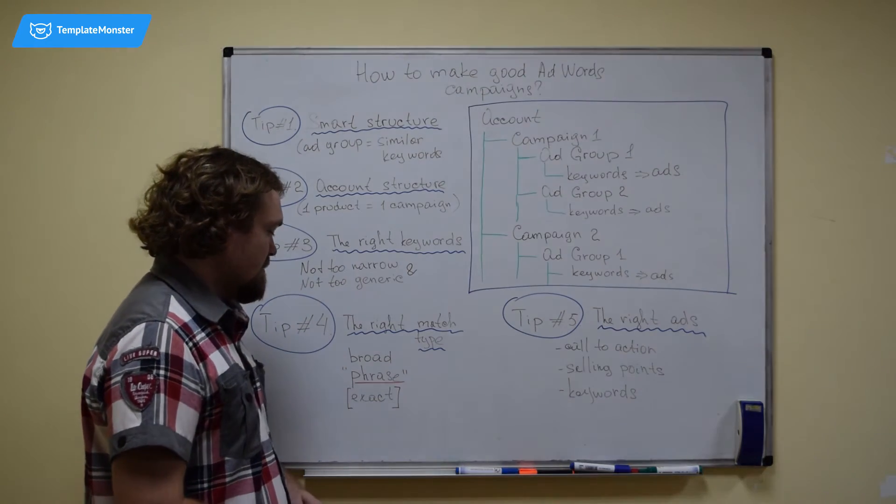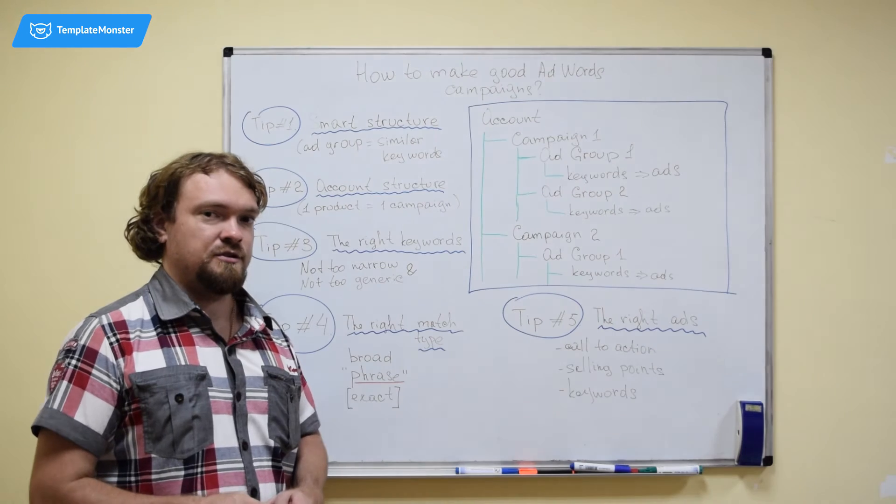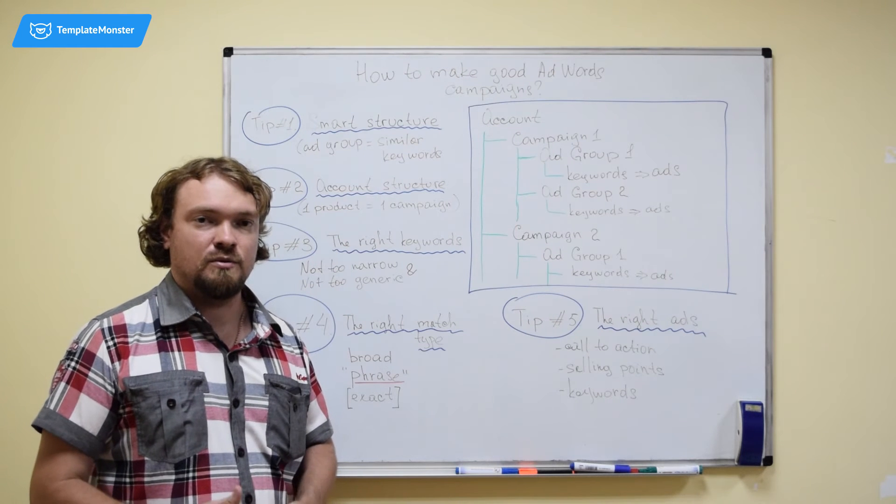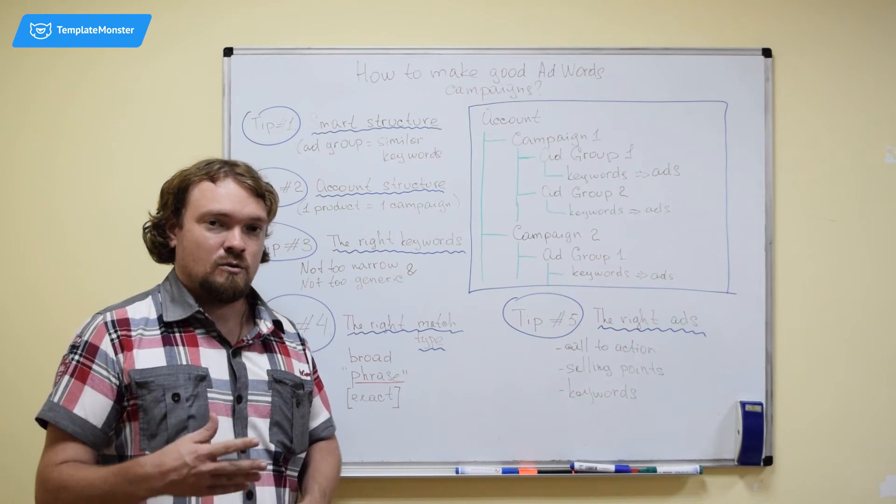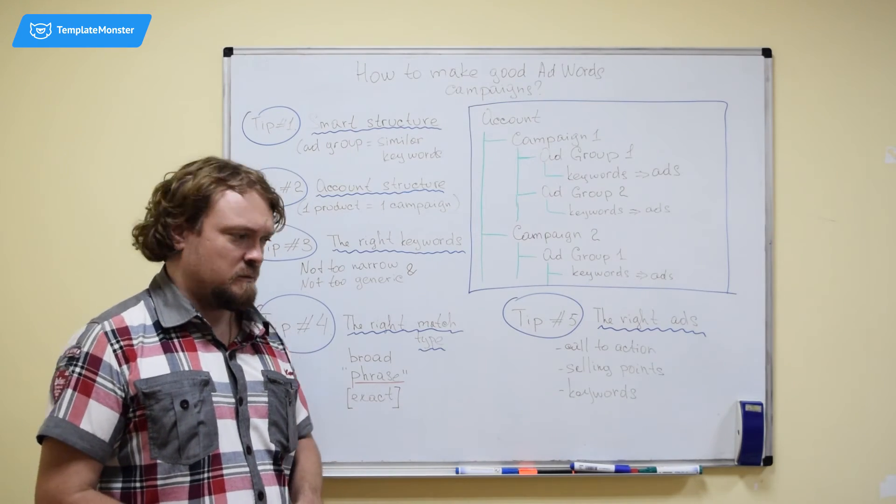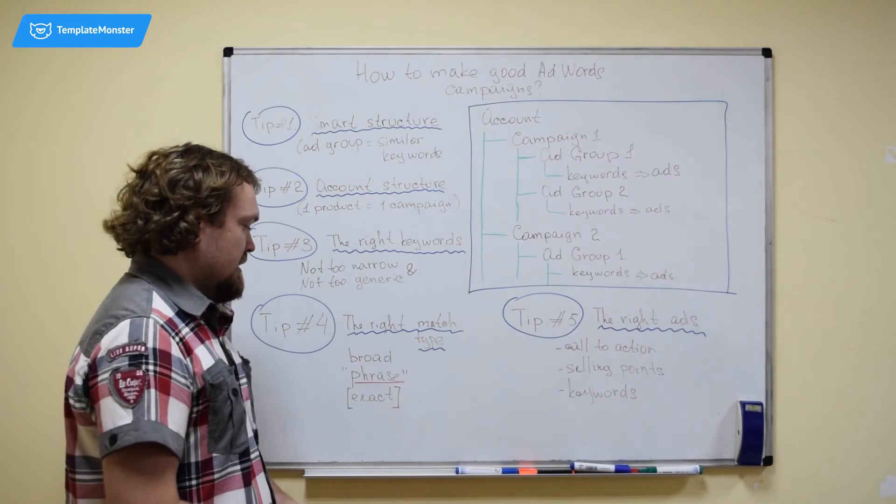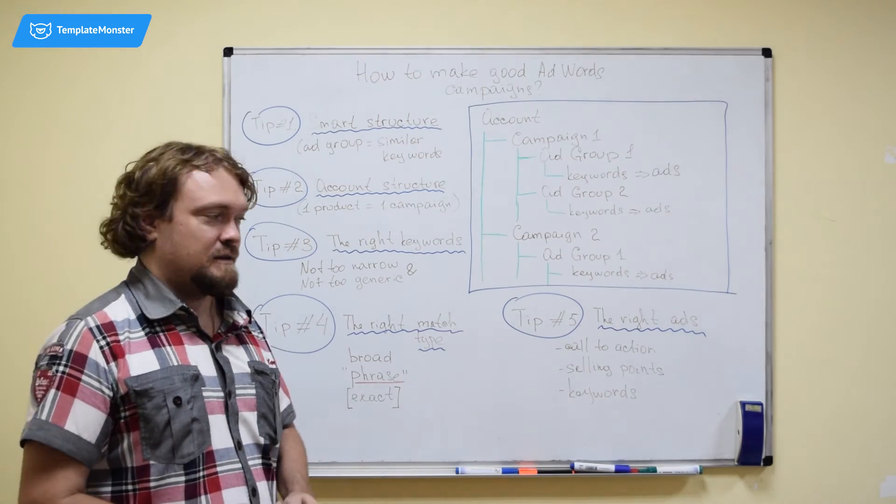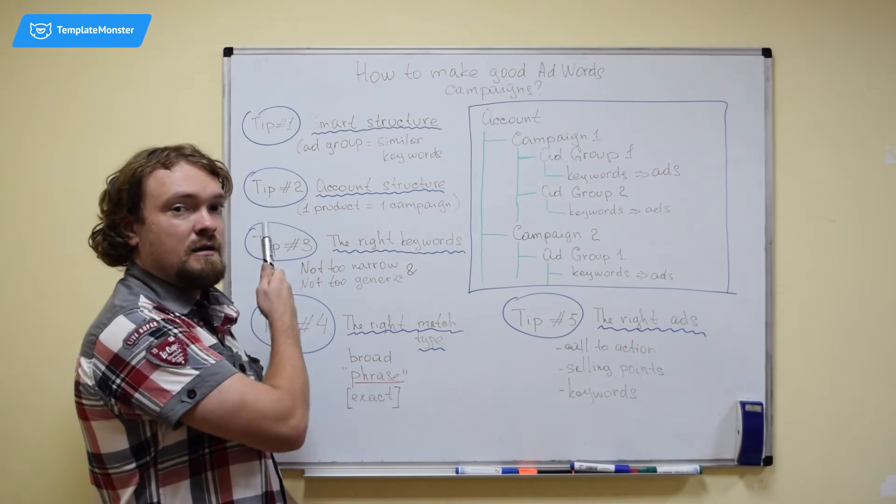And the last major match type is the exact match type. This means that your ad will only be triggered by searches looking exactly the way that you have put in your campaign. With our example, this will mean that only searches that look like photography equipment, not surrounded by anything, not containing anything else, will trigger your ad. So, this is actually something that's very narrow. Broad is something that's very generic and very broad. And phrase is actually the sweet spot of balance. It's actually something that I prefer to use and that I recommend to use. And it's actually something that helps you to find the right balance in this tip as well.